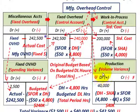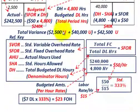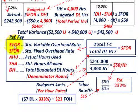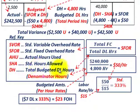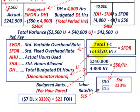Here's our reference key, shown in red. SVOR is the standard variable overhead rate (not used in this example). SFOR is the standard fixed overhead rate. AHU is actual hours used. SHA is standard hours allowed. DH is total budgeted direct labor hours for the period — called denominator hours because they appear in the denominator of the formula for calculating the standard fixed overhead rate.